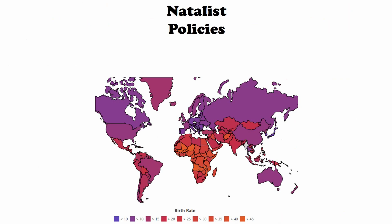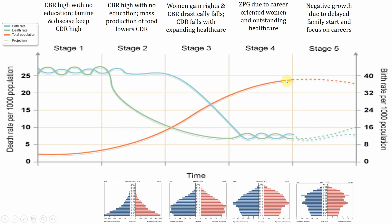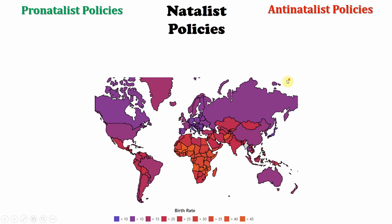The last topic is natalist policies. Here is a map of birth rates of the world by country. There are two camps: natalist means birth policies. There are pronatalists and antinatalists. A pronatalist country wants people to have more kids — these would be stage five or late stage four countries worried their population is getting smaller. Antinatalists have the opposite problem: too many people. The government wants people to have fewer kids because more people means more policing, more laws, more problems — more difficult to take care of and manage.